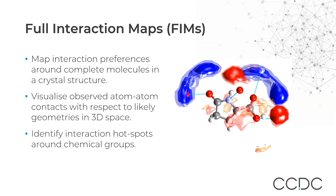Full interaction maps allow you to map the interaction preferences around molecules in a crystal structure. You have a three-dimensional map of probability for interactions, so you can look at contacts like hydrogen bonds or short contacts and rationalize them against where you would expect to find interactions for such a molecule. Full interaction maps also allow you to identify hotspots for interactions around chemical groups, and as a bonus, you can make very pretty images of where you expect to find interactions for your molecule.